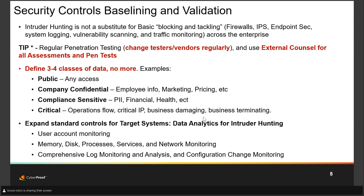For data classes, I recommend no more than four. People try to put in eight, ten, or twelve different classifications, and their scheme becomes so convoluted they usually fail. Once all of this is in place, we can set up expanded controls for targeted systems: user account monitoring, memory, disk space, processes, services, network monitoring, comprehensive log monitoring and analytics, and configuration change monitoring. We'll talk about all the tools involved in those processes a little later.